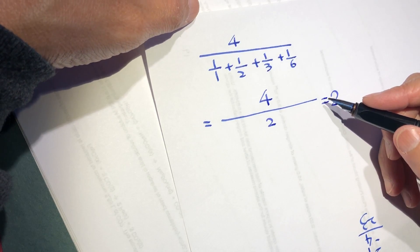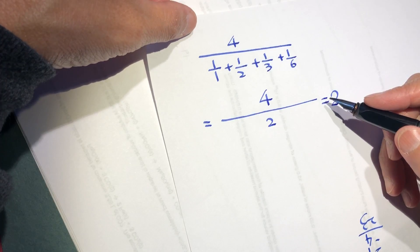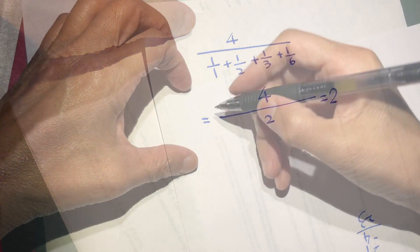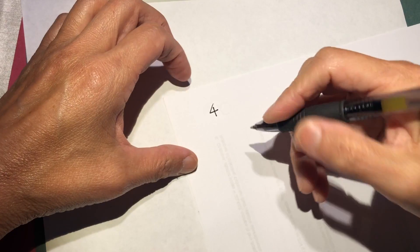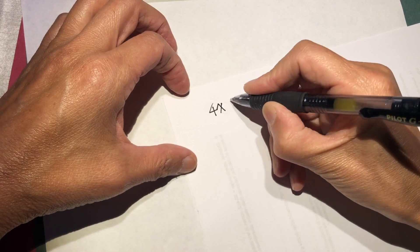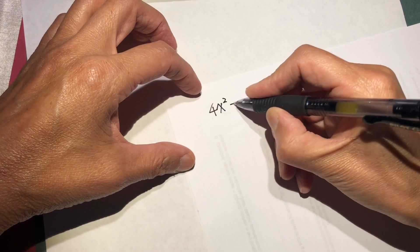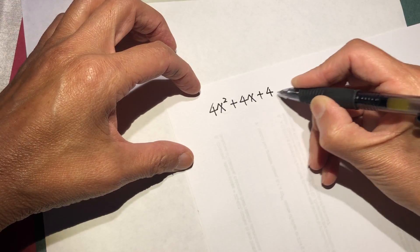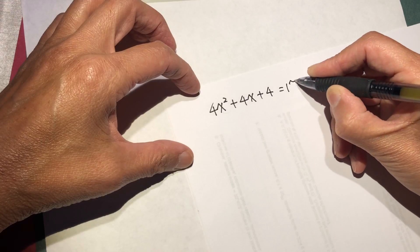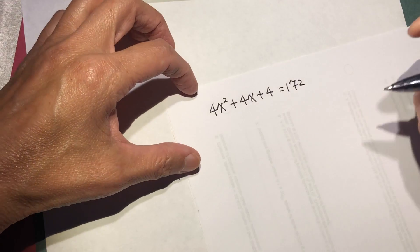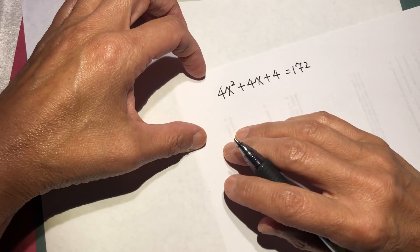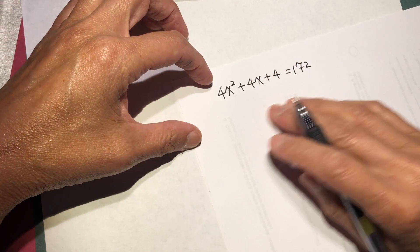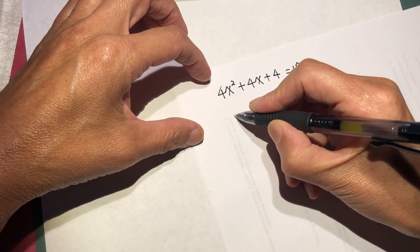Hmm, that is satisfying. Okay, hello dear friends. Here we have this one: 4x squared plus 4x plus 4 equal to 172. So, divided by 4 all together, x squared plus x plus 1 equal to 43.